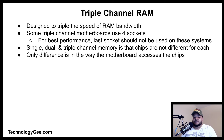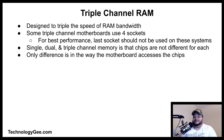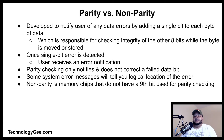Triple channel RAM is designed to triple the speed of the RAM bandwidth. Some triple channel motherboards use four sockets, but for best performance the last socket should not be used on these systems. One important thing to remember about single, dual, and triple channel memory is that the chips are not different — the only difference is in the way the motherboard accesses the chips.